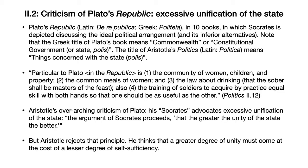In a later chapter at the end of Book Two, Aristotle briefly returns to summarize Plato's views in the Republic in one sentence that divides into four parts. Particular to Plato: one, the community of women, children, and property; second, the common meals of women; third, the law about drinking, that the sober should be masters of the feast; and four, that soldiers be trained to acquire equal skill with both hands. This looks like a grab bag of topics, and hardly like a crisp summary of the entire point of the Republic.